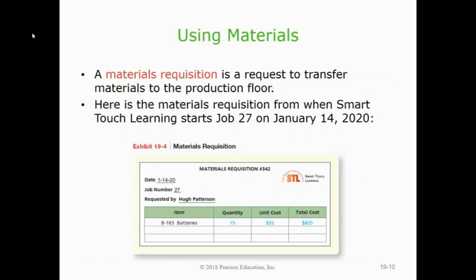Here is what that requisition form looks like. When someone comes in, they tell whoever is working in storage what amount and type of materials they need for a particular job. In this case, the batteries were requisitioned for job 27 — making tablets — 15 batteries at $55 each for a total cost of $825. The form must be dated and signed by both the person who requested and the person in storage, so there are two parties confirming the transfer happened. These requisitions are stored in the system to track how inventory costs are flowing — because once materials are requisitioned, they're no longer a raw material but a work in process.